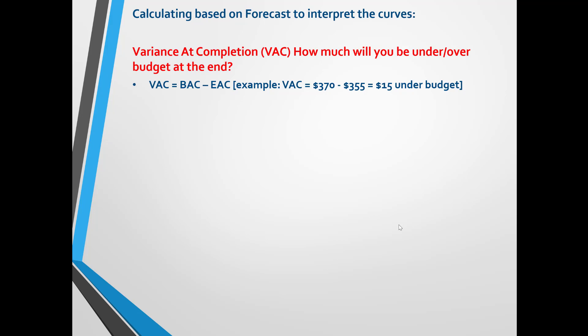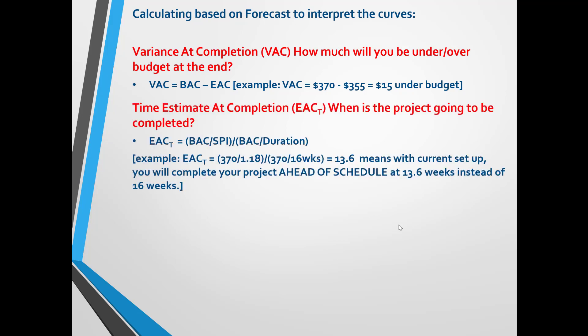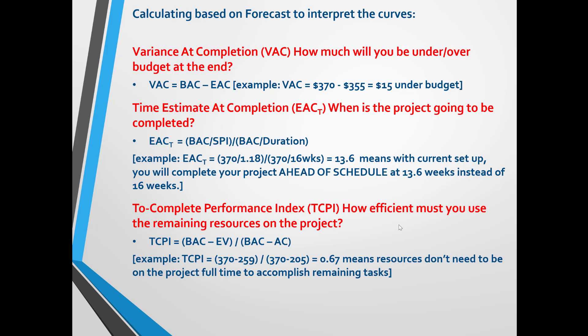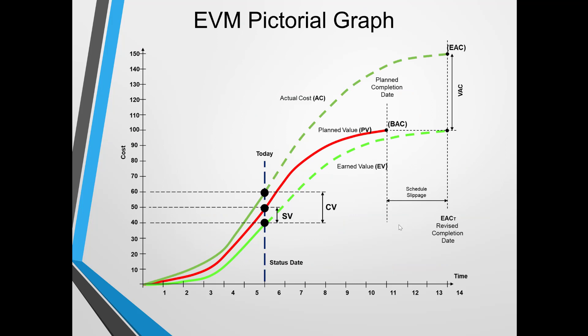The additional calculations for forecasting will answer: How much will the project be under or over budget? When is the project going to be completed? And how efficient must you use the remaining resources on the project? Just like the performance measure table shown earlier, this EVM graph is something you want to have handy while you are learning how to interpret EVM — it shows all of the information calculated in the example.